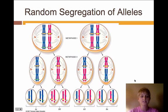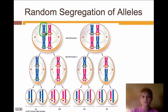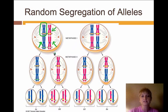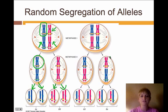Mendel also figured out that alleles segregate randomly. What this means is that when these alleles line up on the metaphase plate during meiosis, it's random as to how they line up. This chromosome could have just as easily been in any other position — there's no pattern to how they line up, it's completely random. So when those sister chromatids split and go into the gametes, it's a random process. Each time it splits it could be different, so it's completely random how those alleles go into the gametes because of how they line up in metaphase.